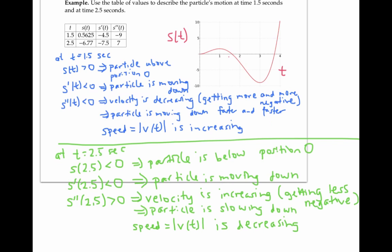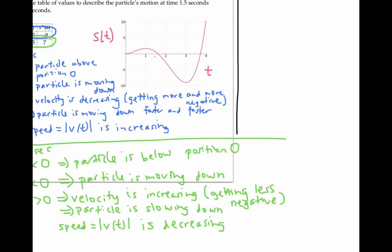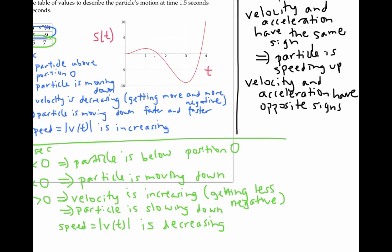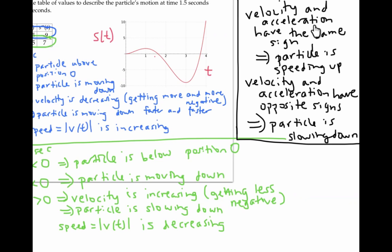Notice that in the first example, when velocity and acceleration were both negative — the same direction — the particle was speeding up. In the second example, where velocity and acceleration were in opposite directions, the particle was slowing down. This is true in general: when velocity and acceleration have the same sign, both positive or both negative, the particle is speeding up. When they have opposite signs, the particle is slowing down. One way to think about this is in terms of force: if force is in the same direction as the particle is already going, it speeds up; if it's going against the particle's motion, it slows down.